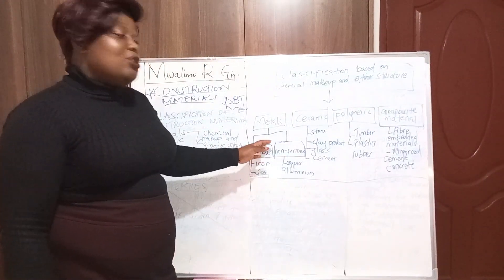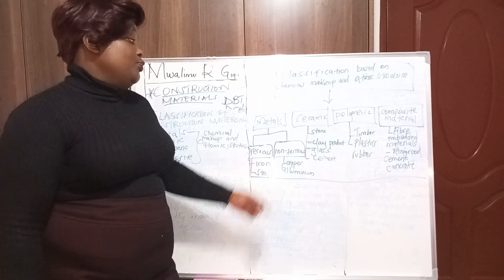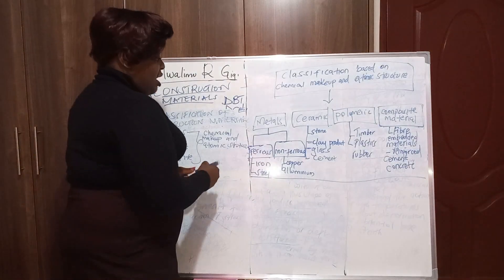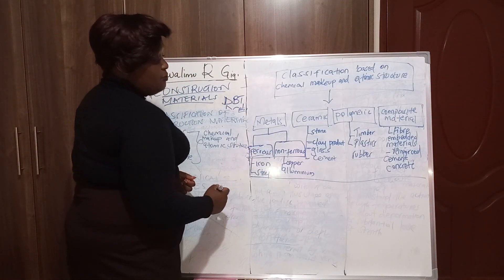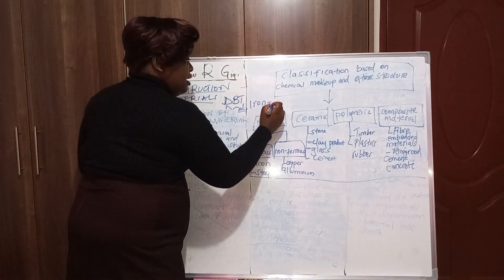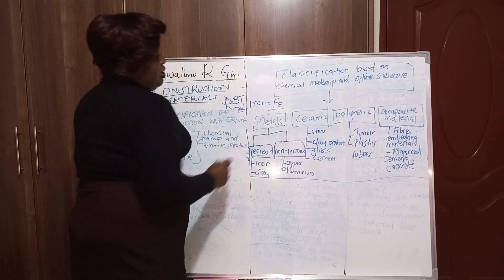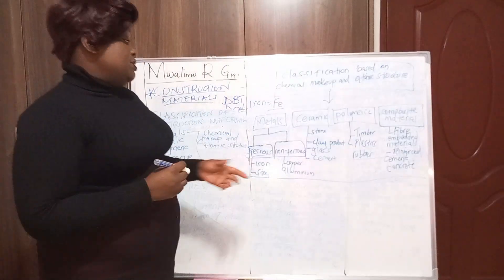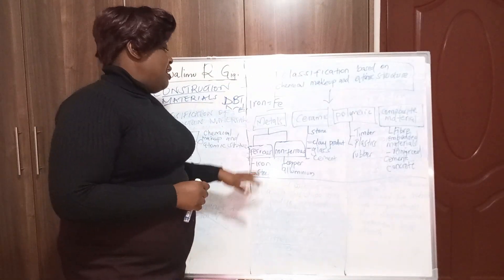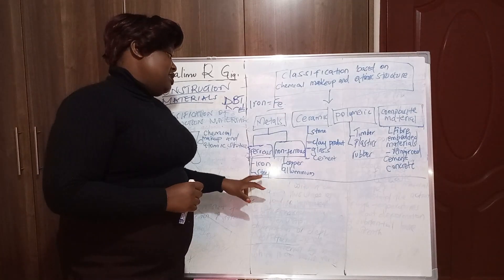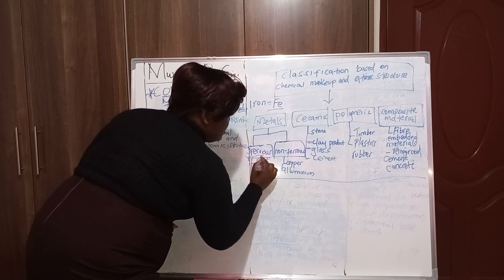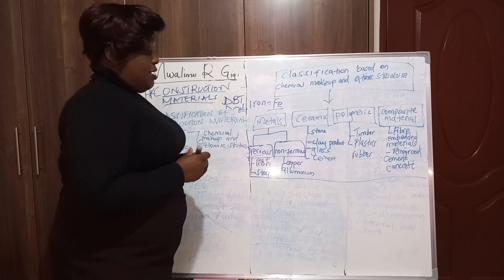Metals are further classified into two: ferrous and non-ferrous metals. From the word 'ferrous' — these are metals that contain iron, since iron is written Fe. Examples of ferrous metals are cast iron and steel.